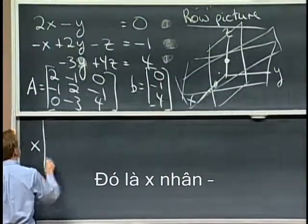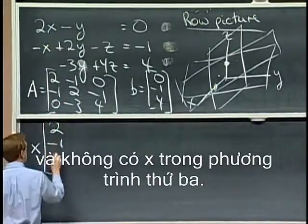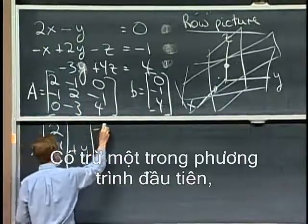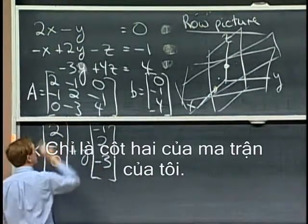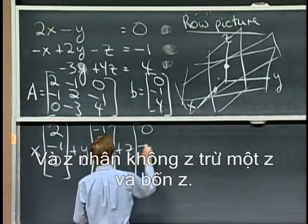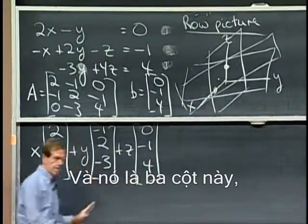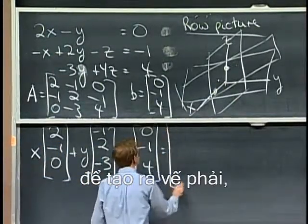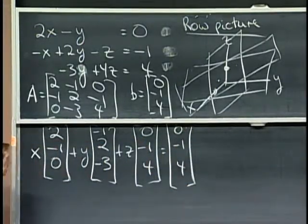So let me take the column picture. That's x times, so there were 2 x's in the first equation, -1 x's, I'm just taking, and no x's in the third. It's just the first column of that. And how many y's are there? There's -1 in the first equation, 2 in the second, and maybe -3 in the third. Just the second column of my matrix. And z times no z's, -1 z's, and 4 z's. And it's those three columns, right, that I have to combine to produce the right-hand side, which is 0, -1, 4.